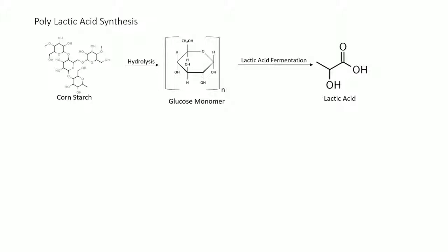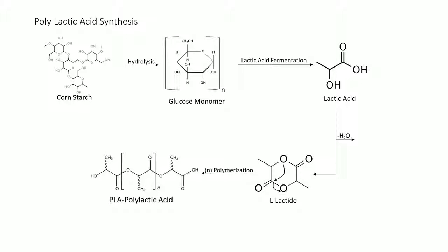After glucose is isolated, it is run through a lactic acid fermentation process in which bacteria utilize glucose to excrete lactic acid. Purifying this process involves heat treatment and liquid-liquid extractions. Lactic acid is then dehydrated to produce a cyclic diester that can polymerize within itself and form polylactic acid.